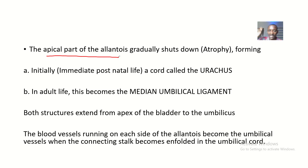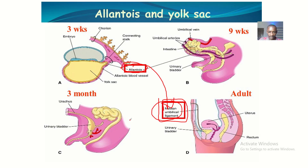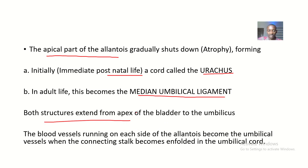Now let's talk about the apical part of the Allantois, as this is the part that actually forms a lot of things. The apical part gradually shuts down, or atrophies. As it atrophies, it initially forms the Urachus in immediate postnatal life. Later on, the Urachus becomes the median umbilical ligament. Both structures extend from the apex of the bladder to the umbilicus.